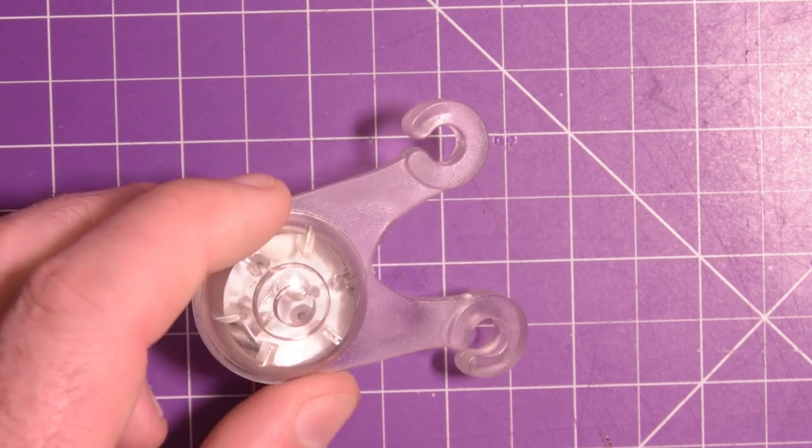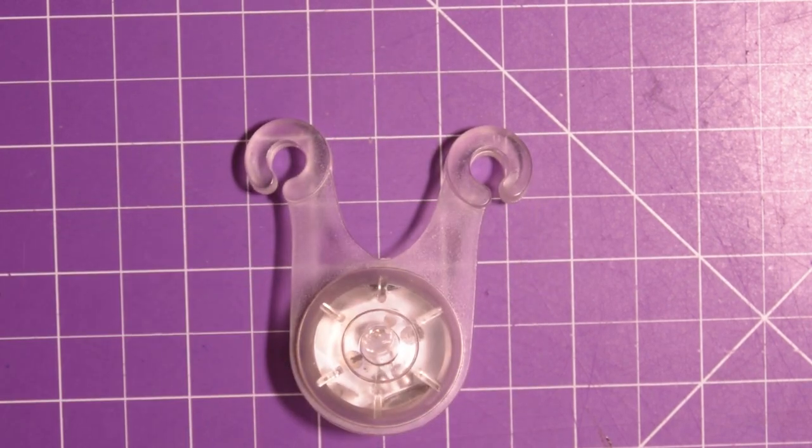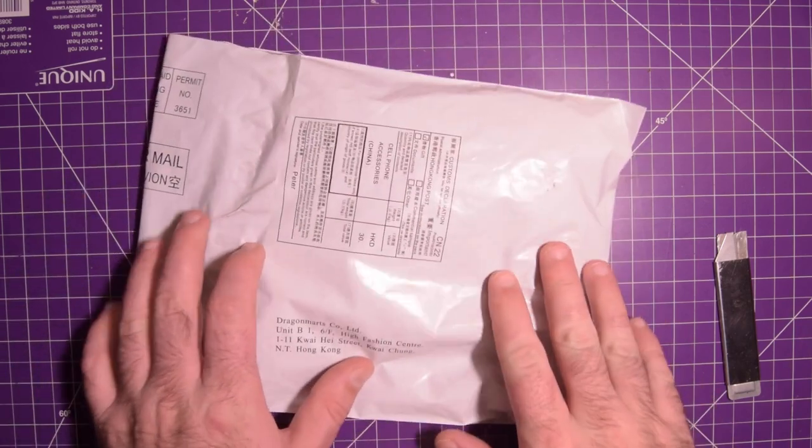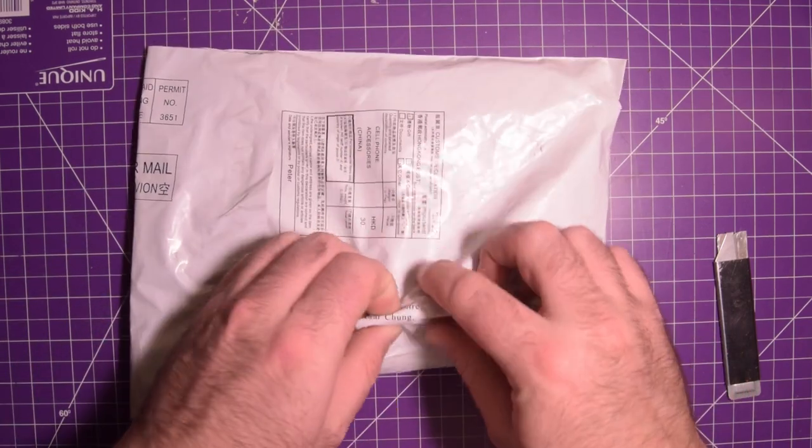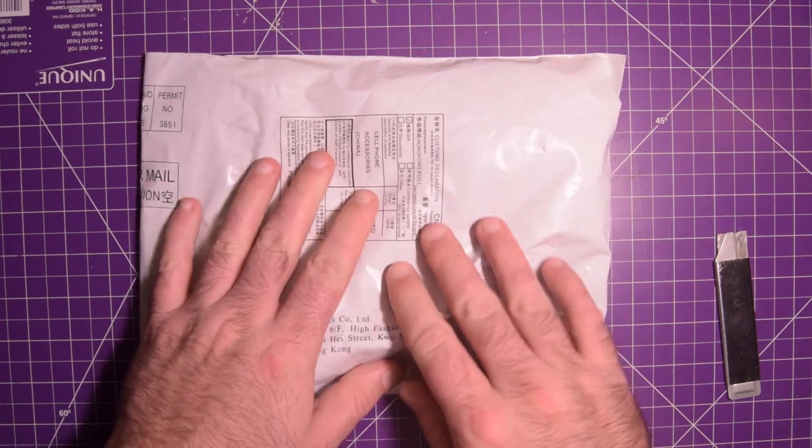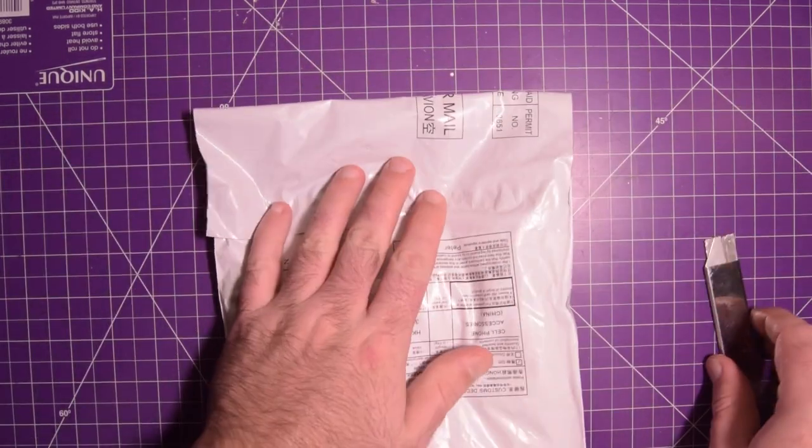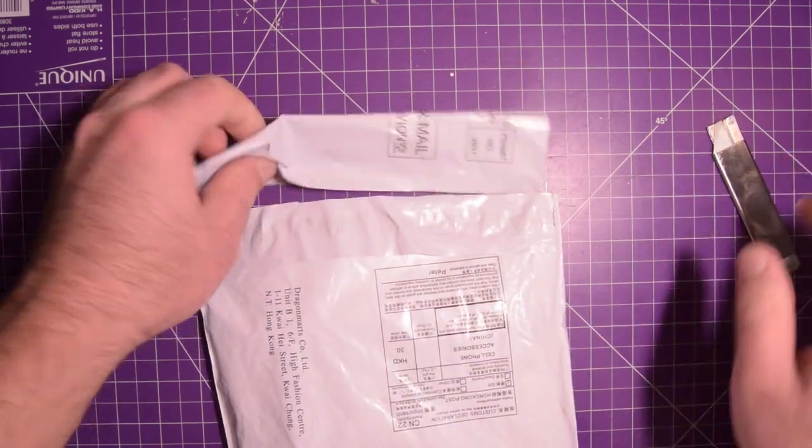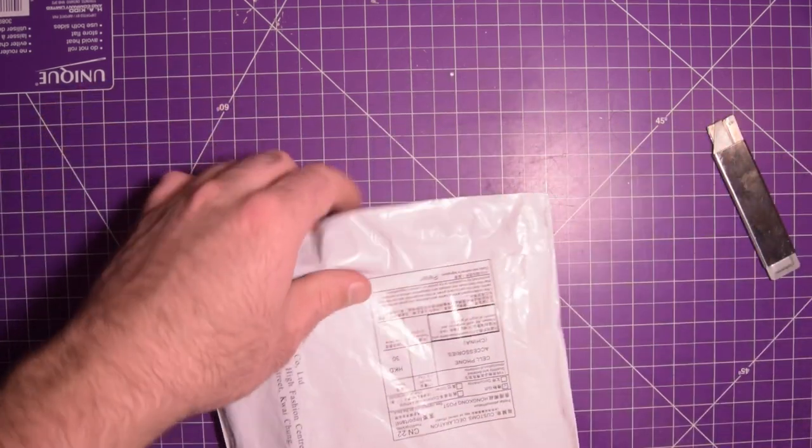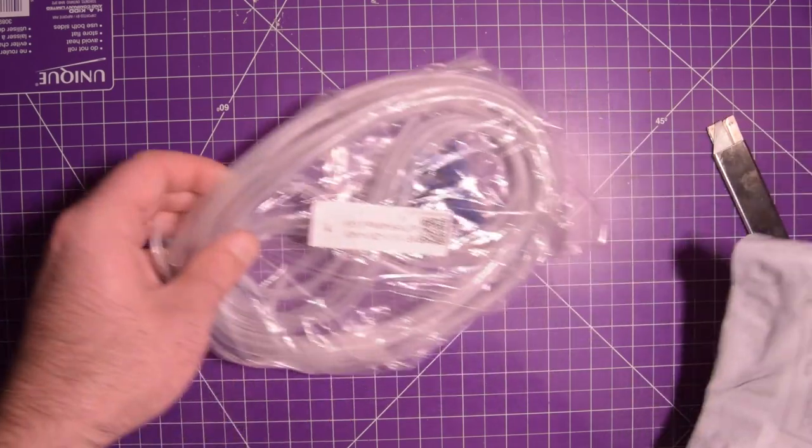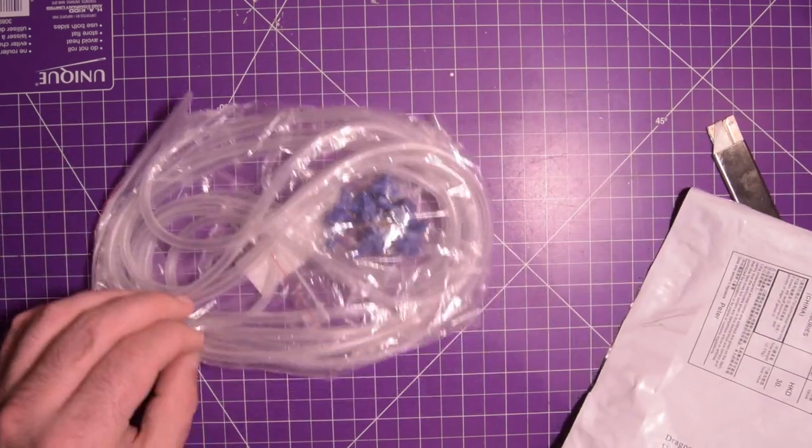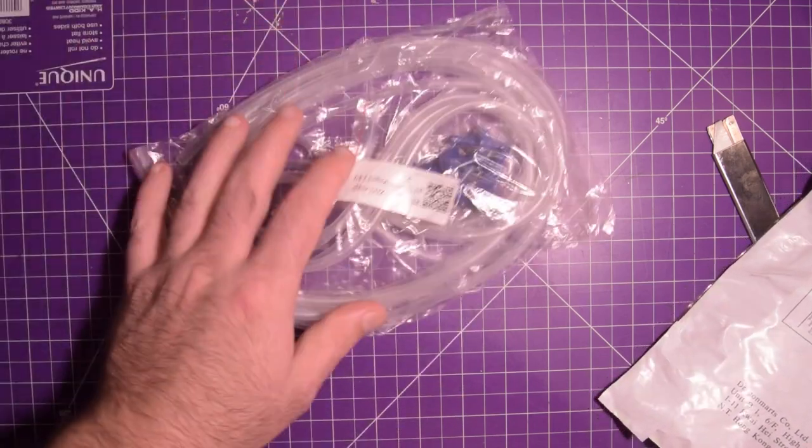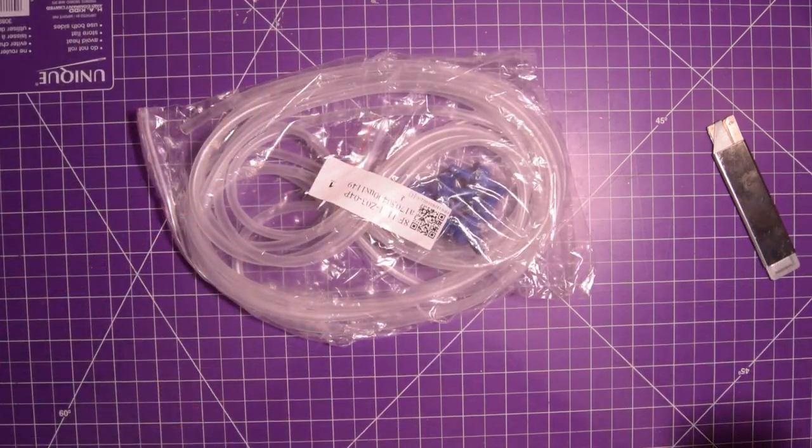This one I'm not sure what it is but it says cell phone accessories. Inside it's like squishy stuff. I'm not sure what kind of cell phone accessories I would have bought.